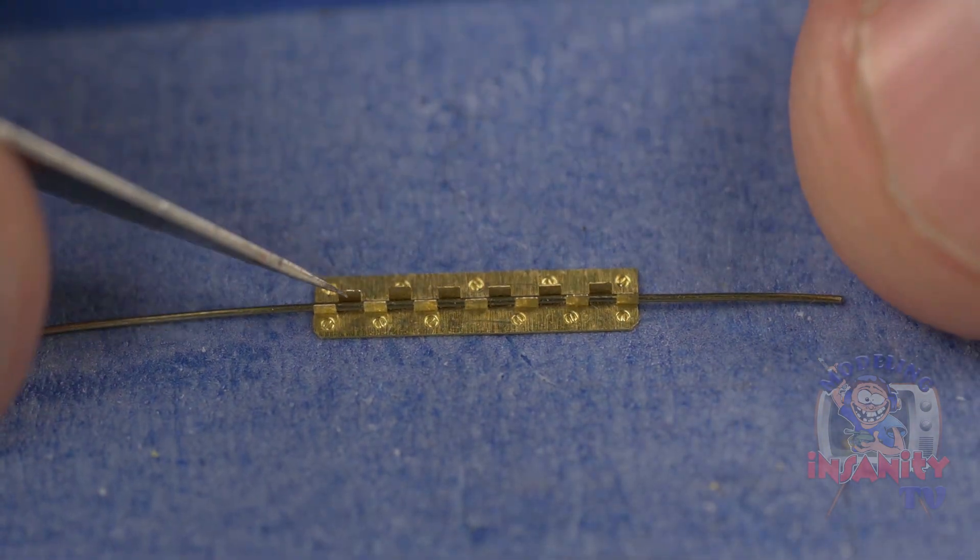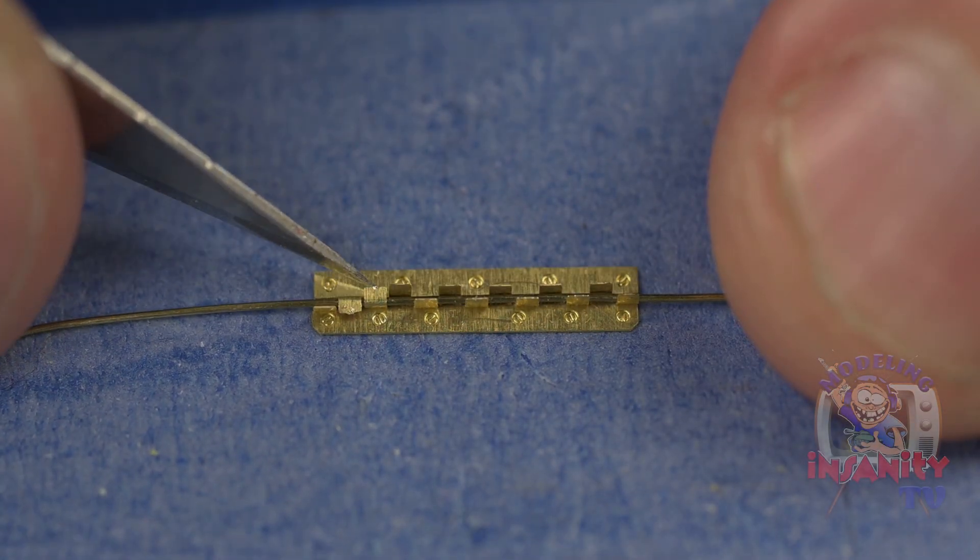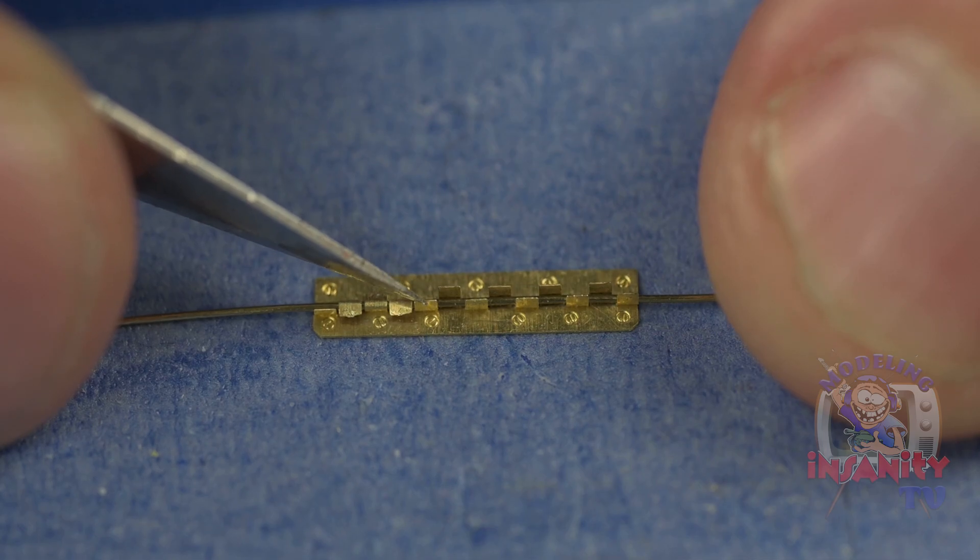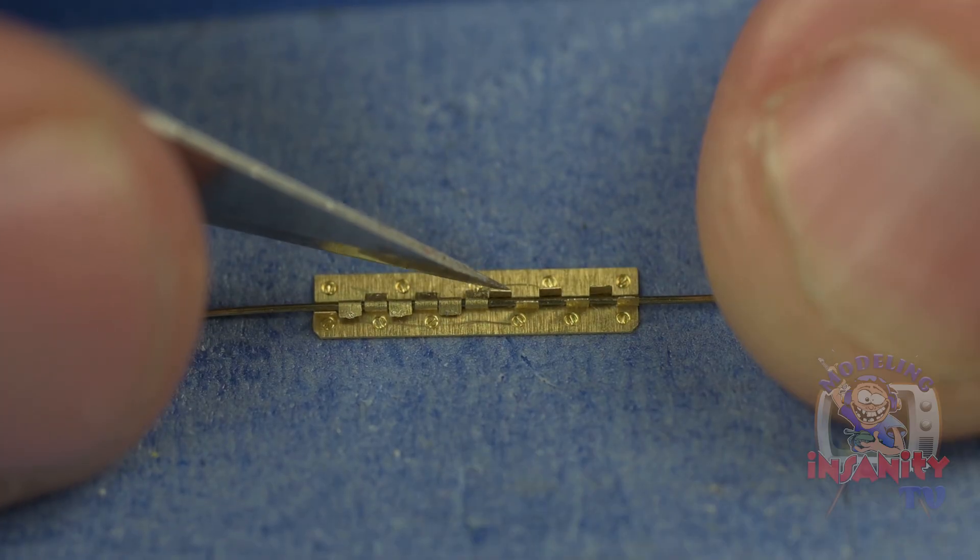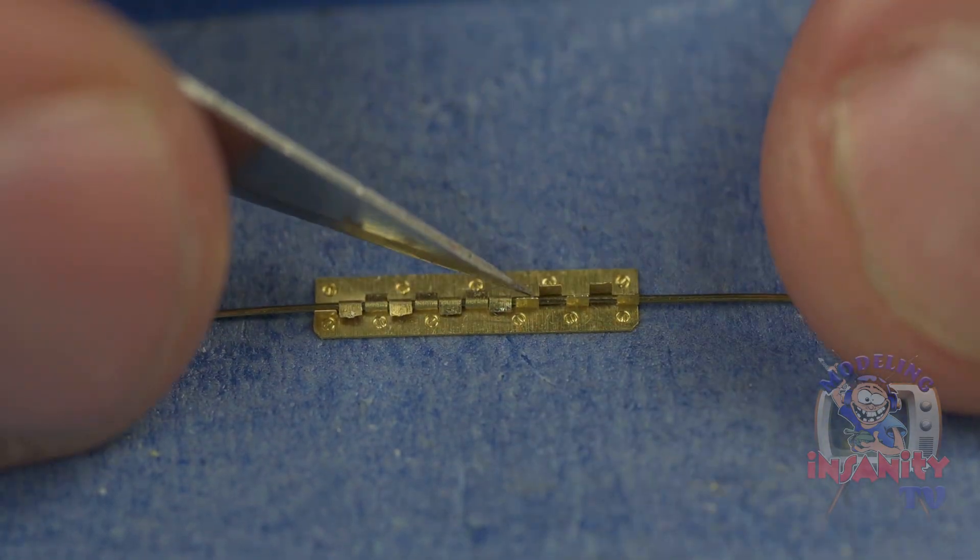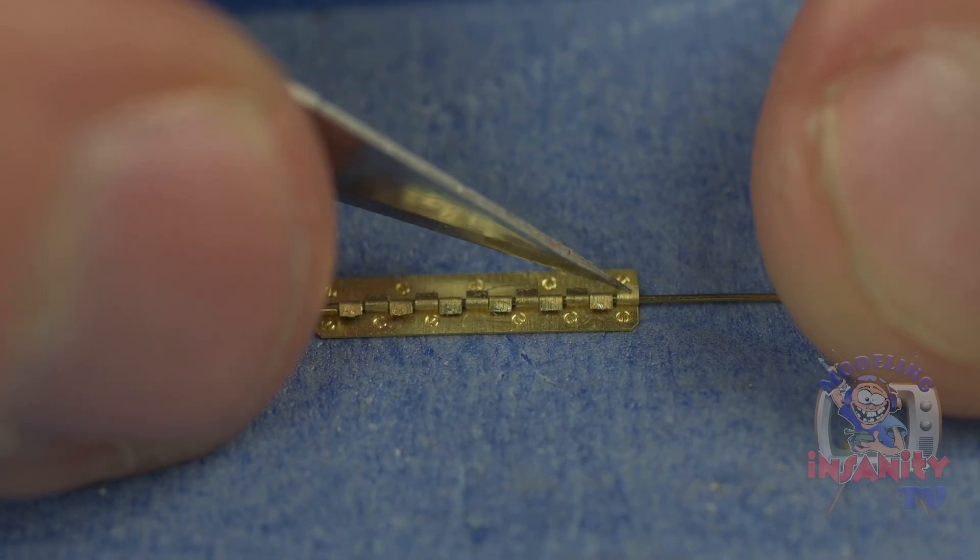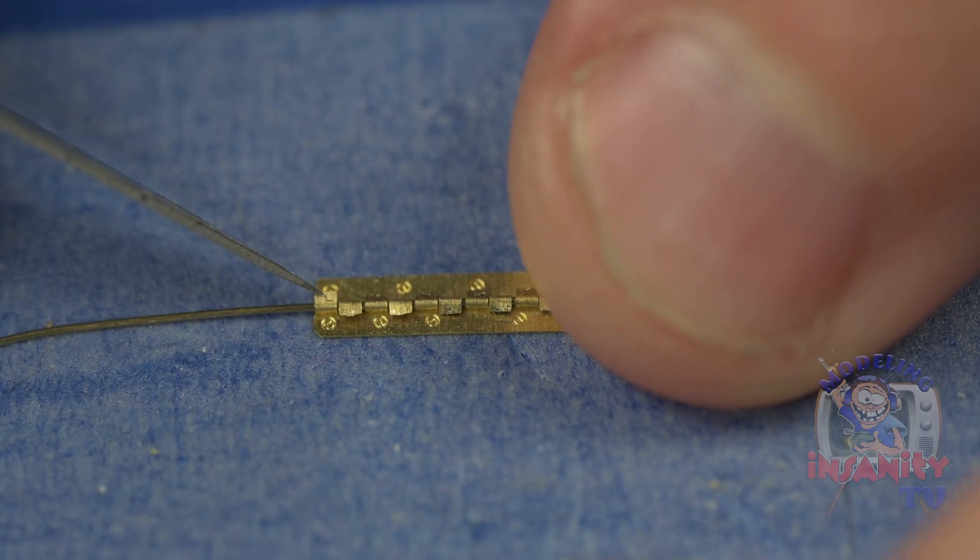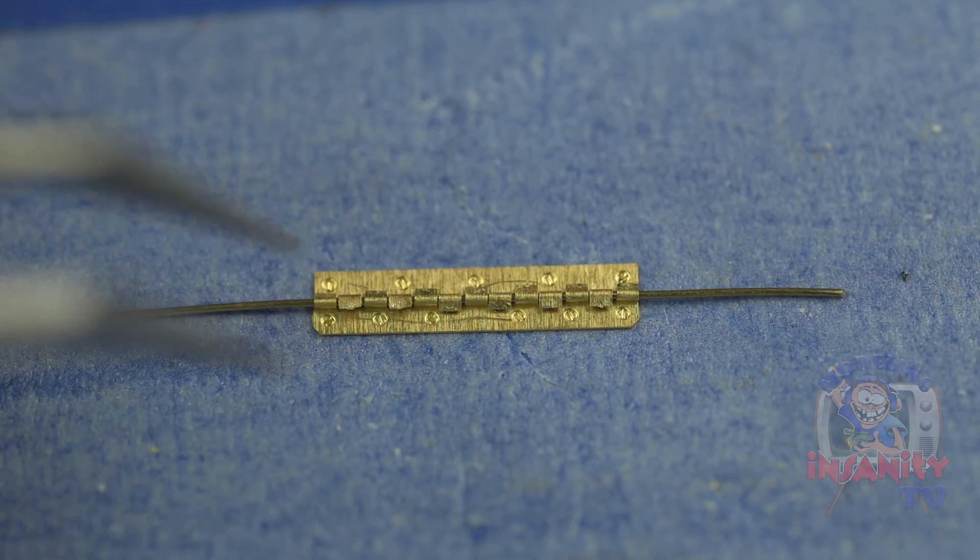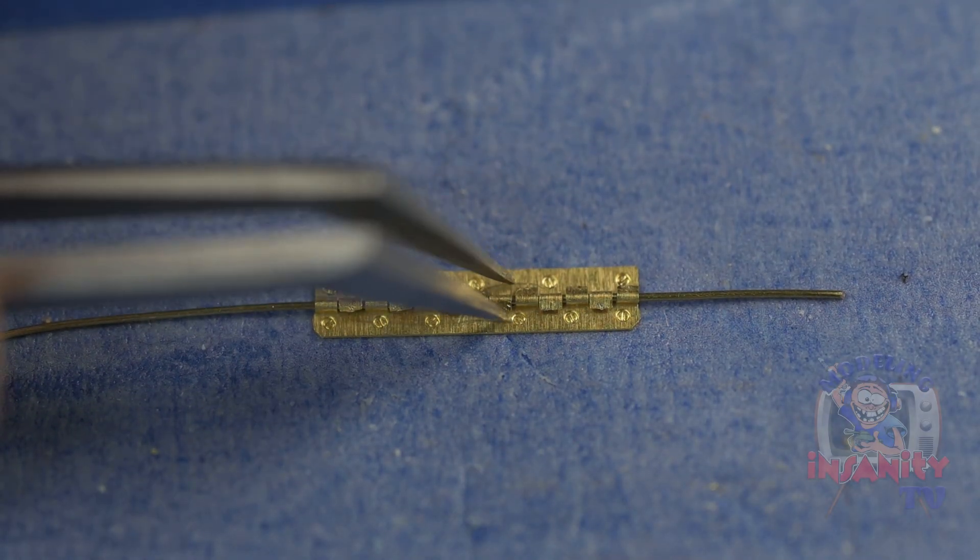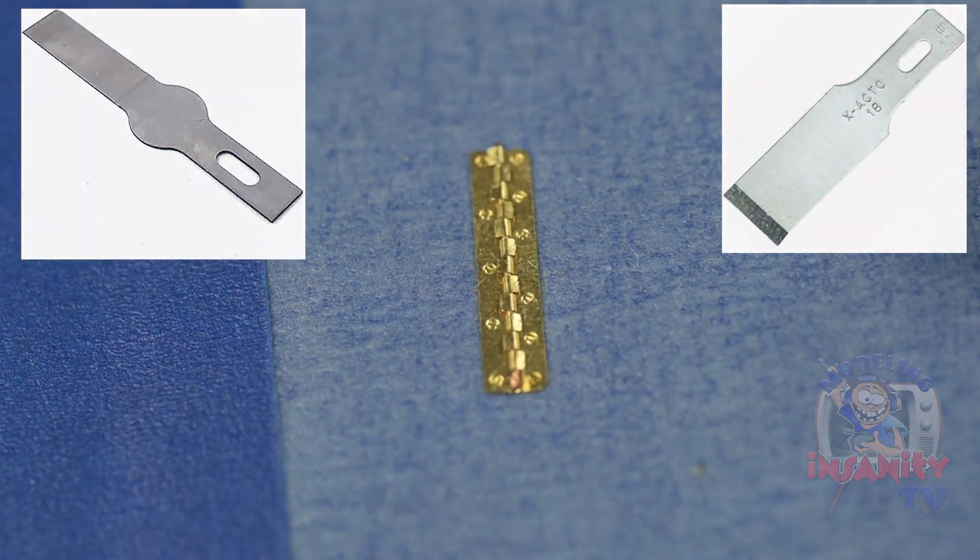Using a number 11 X-Acto blade or pointed tweezer, bend the flaps of the hinges over and around the wire. When bending the flaps, make sure to bend it completely over the wire to where it's almost touching the base of the other hinge. Now using a pointed tweezer, push the overlap part of the flap further around the wire, ensuring that it's wrapped around as much as possible.